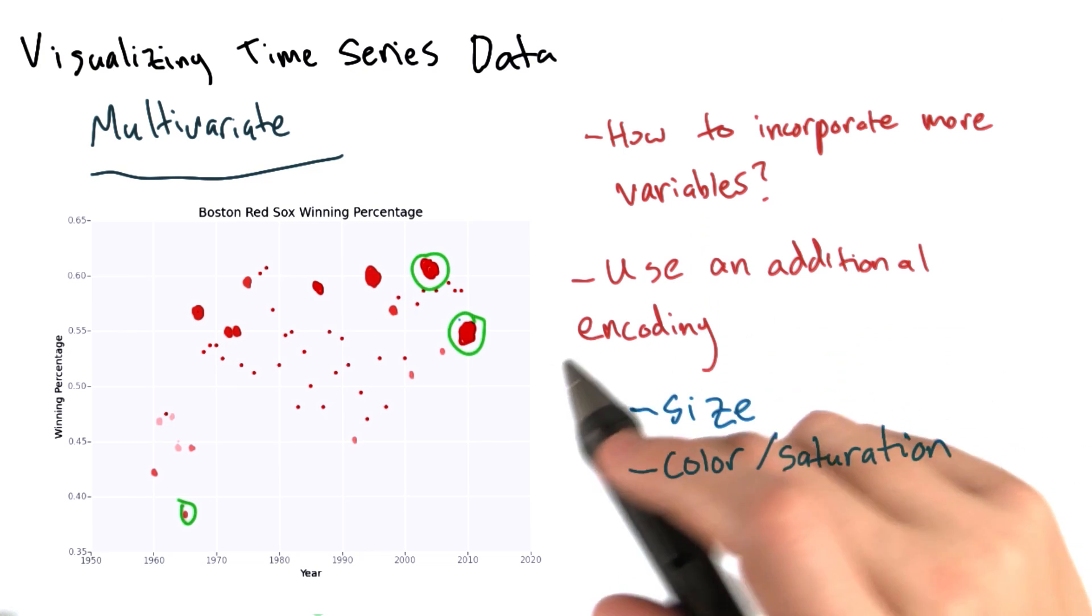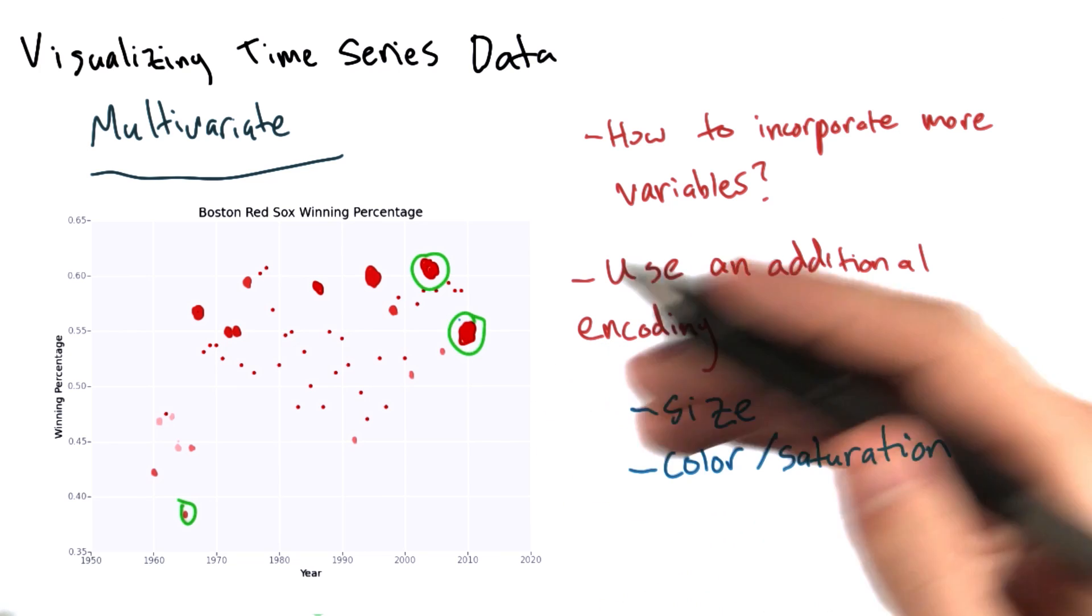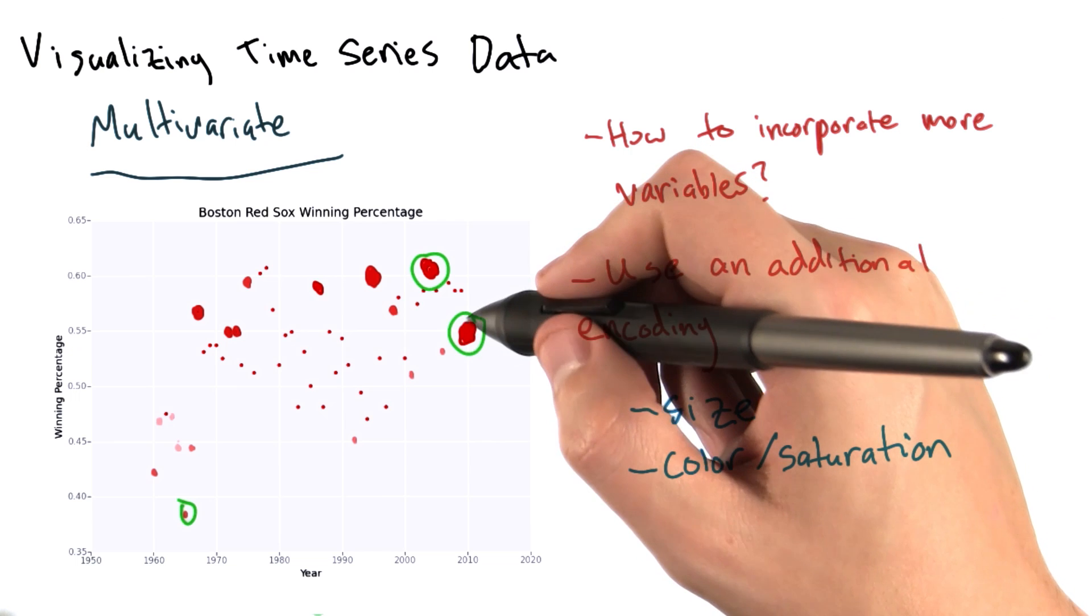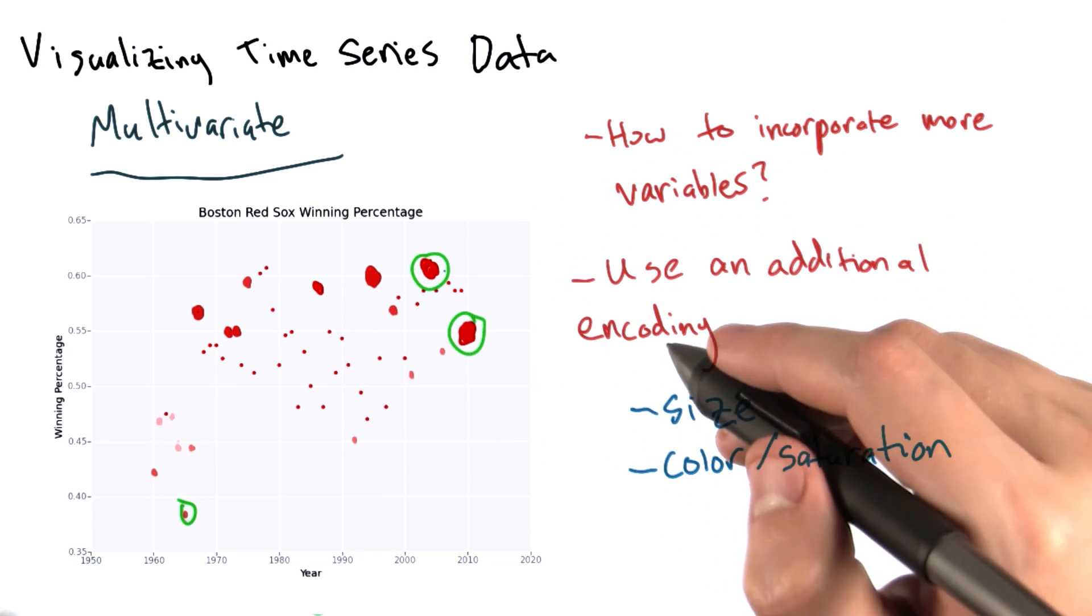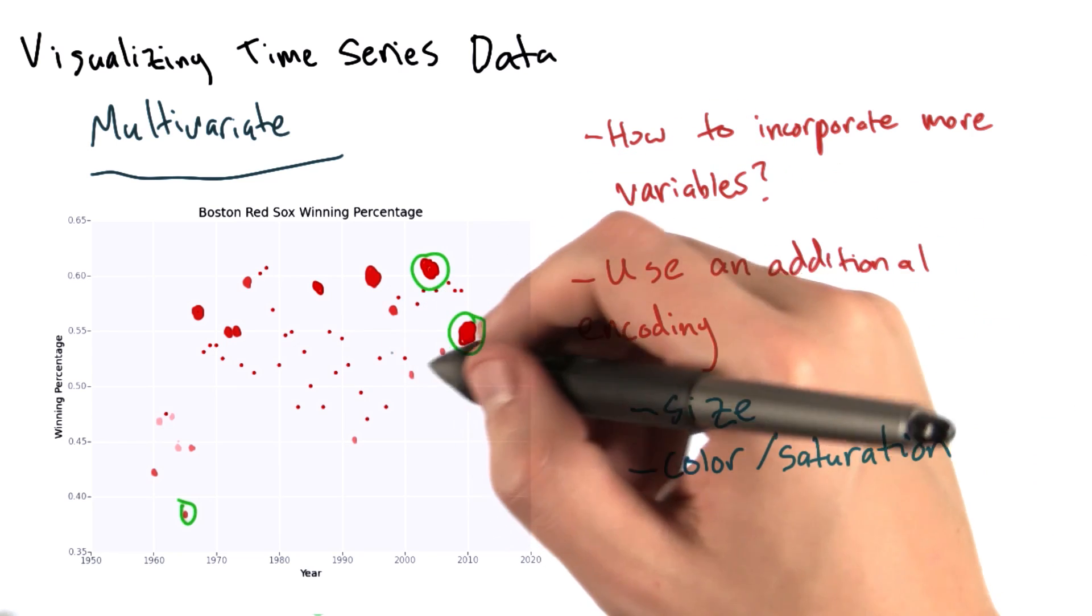A redundant visual cue can help reinforce what might be a challenge to see if we only used one visual cue. So by using both size and color here, hopefully we really hammer home to the viewer that there were more or fewer home runs in a given year.